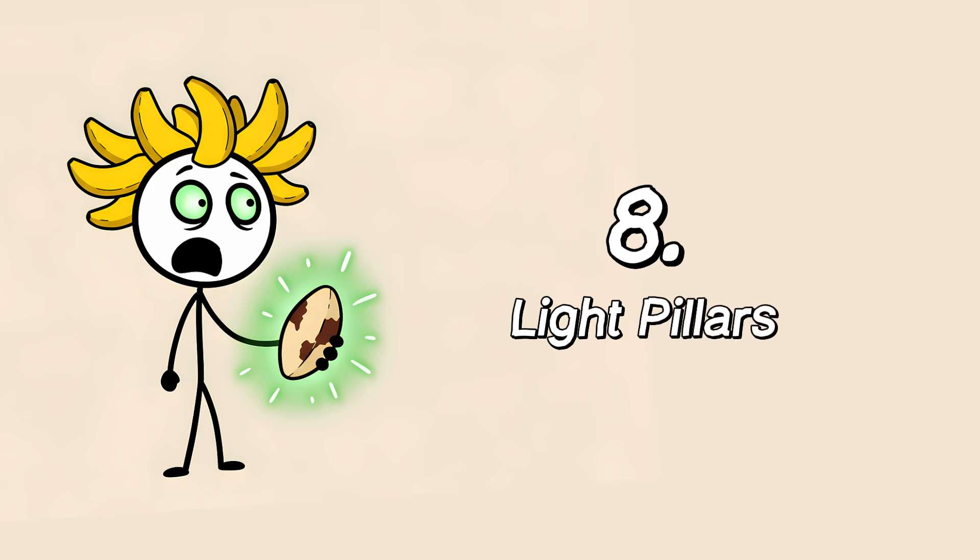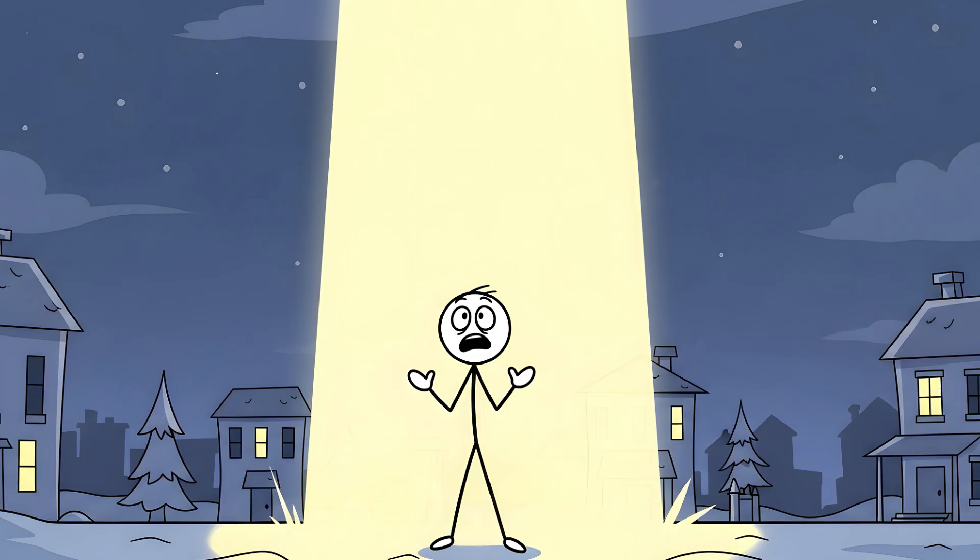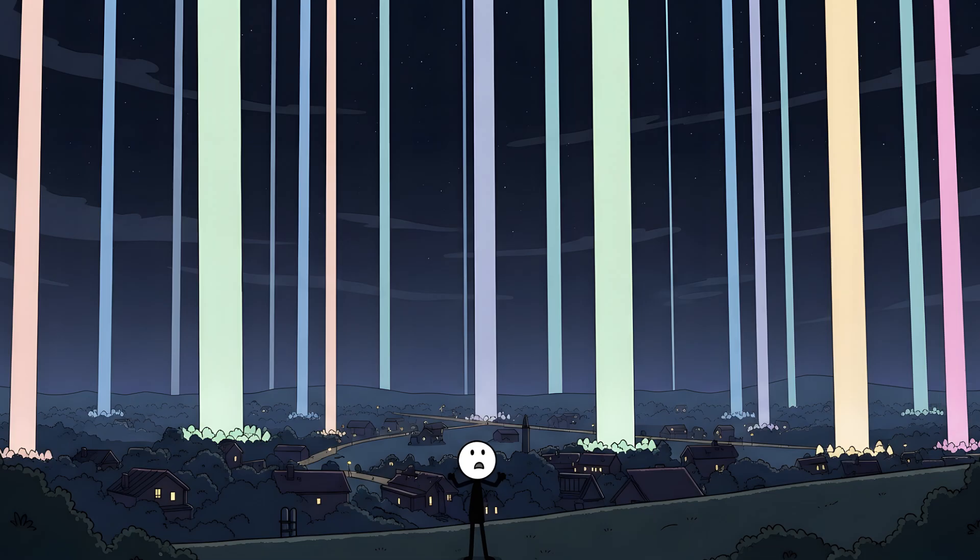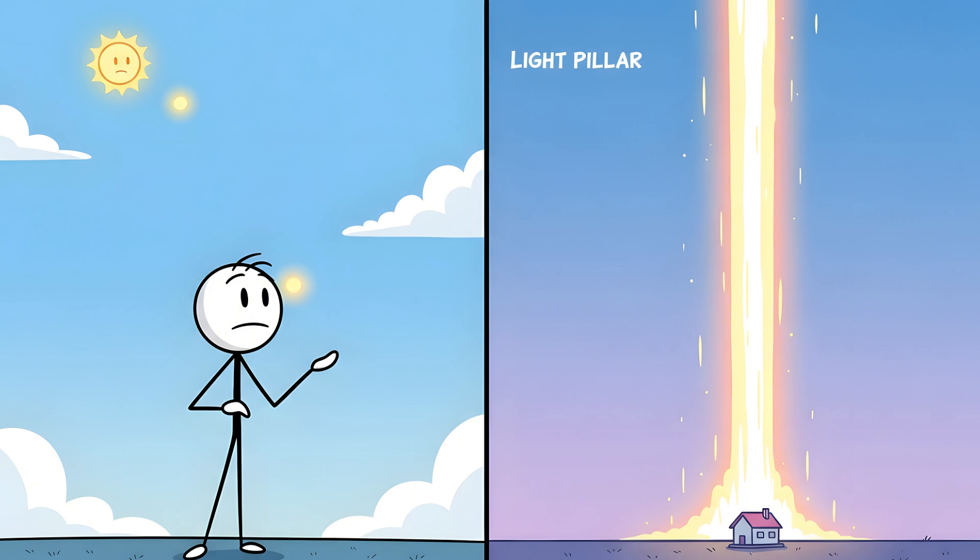Number 8. Light Pillars. Okay, so you're standing outside on a frigid night in some sleepy northern town. You look up, and it looks like the alien abduction beam you were always promised has finally arrived. Not just one, but dozens of them. Massive, vertical columns of light shoot straight up into the sky from the ground, looking like the world's most holy parking lot. Or a sign that a video game character just found a rare loot drop. These are light pillars, and they're the sundog's taller, more dramatic cousin.